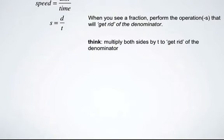When you see a fraction, we're going to perform the operation that will get rid of the denominator, the denominator being a divide. So we're going to multiply both sides by t to get rid of the denominator.